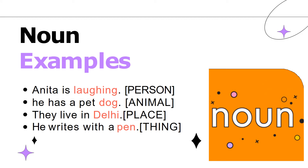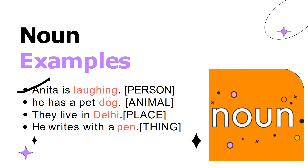The examples of noun are written on the screen. The first sentence is 'Anita is laughing.' Who is laughing? Anita is laughing — Anita being a person stands for noun here. The second sentence is 'He has a pet dog.' Dog, which stands for an animal, is a noun here. Third: 'They live in Delhi.' Delhi is a name of a place, which means it is a noun. The last one: 'He writes with a pen.' Pen is a thing, and a thing is an example of noun.